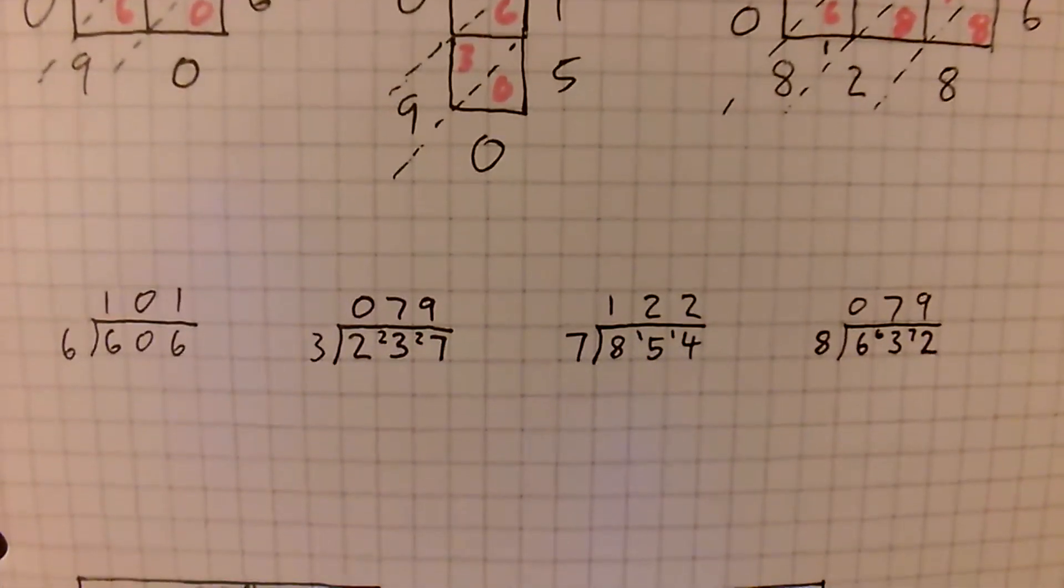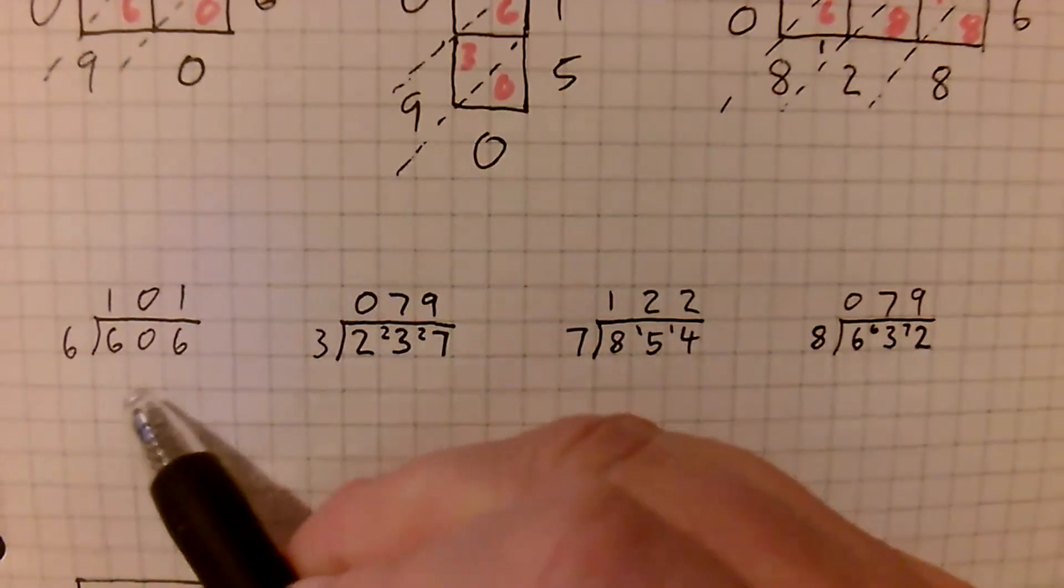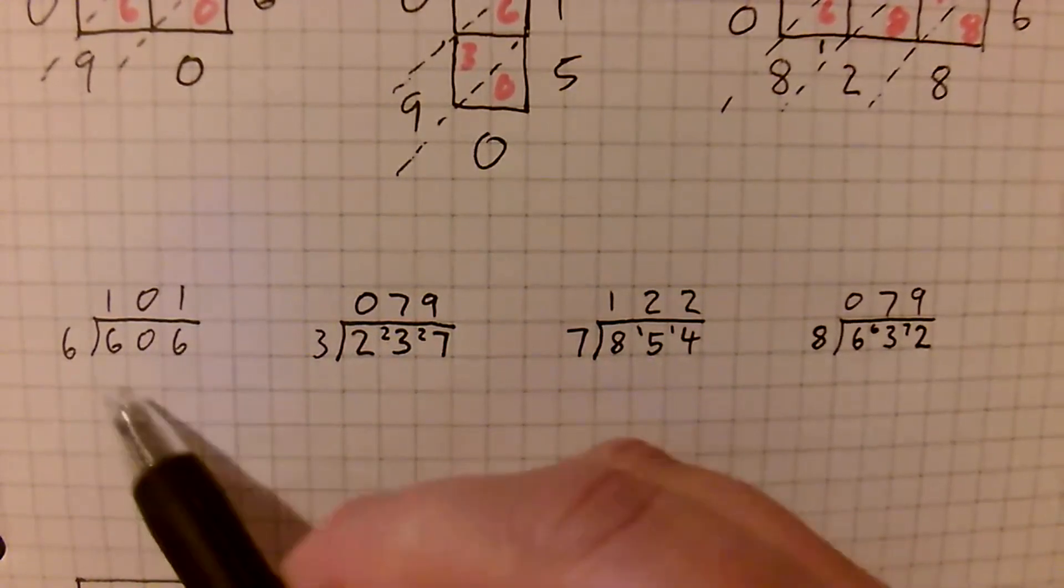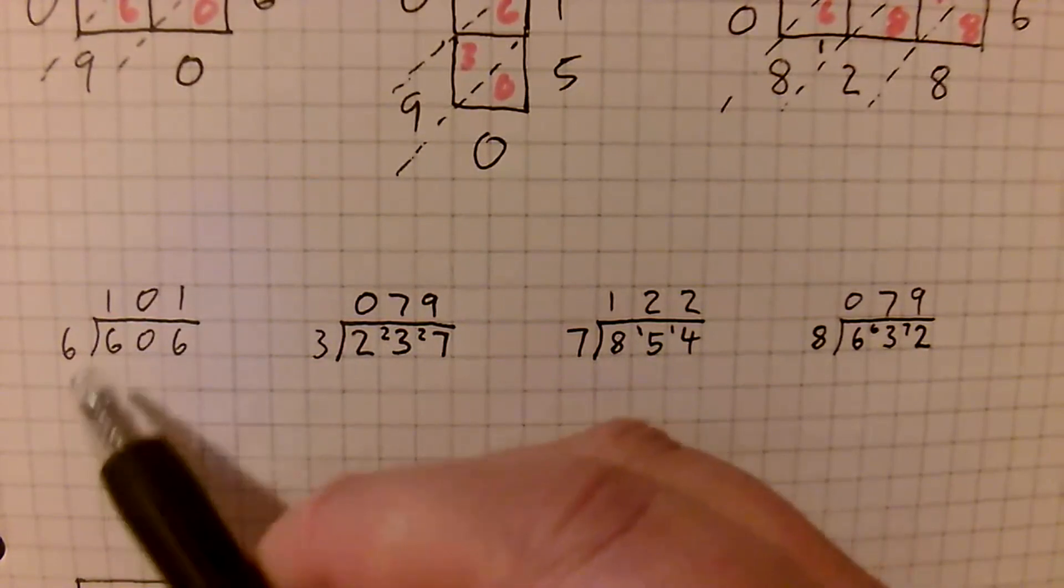Okay, move down a little bit and we can focus on the bus stop divisions here. So the first one hopefully should have been fairly straightforward. Deliberately did it without needing to use any exchanging or any remainders.